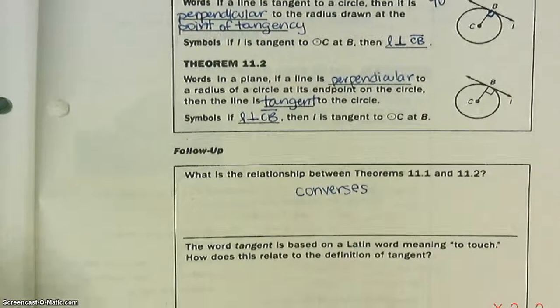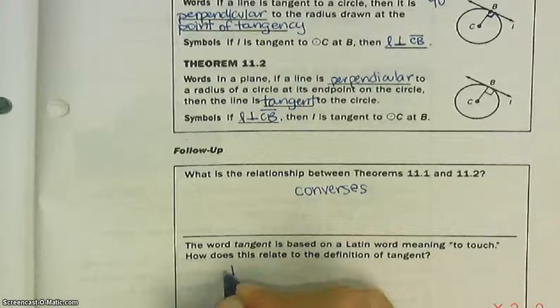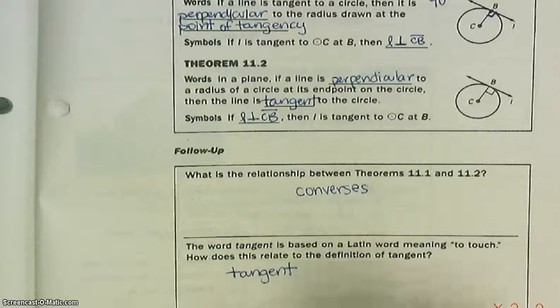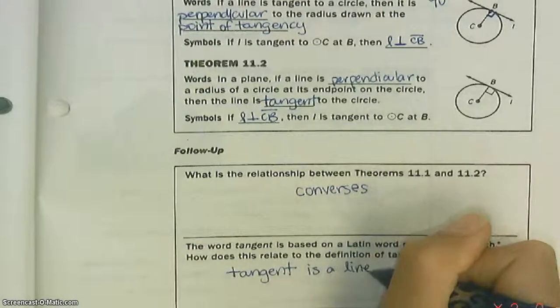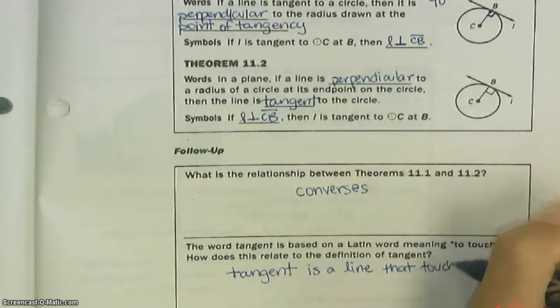The word tangent is based on a Latin word meaning to touch. How does this relate to the definition of tangent? Well, if you remember, tangent means it's a line that touches once. Touches the circle once.